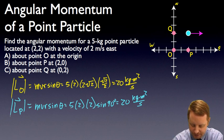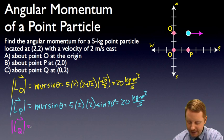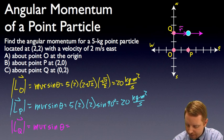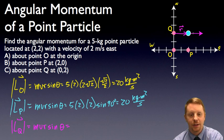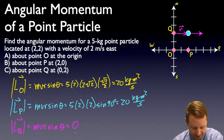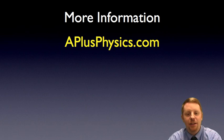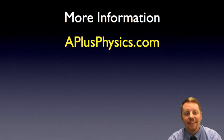Now let's find the magnitude of the angular momentum about point Q. That's m v r sine theta. Our position vector from Q to our particle points in the same direction as the velocity vector, so the angle between r and the velocity vector is 0 degrees. Sine of 0 is 0, so the angular momentum of that particle about point Q must be 0. This shows that angular momentum is dependent upon your reference point. Hopefully that gets you started with angular momentum. We'll talk more about it when we discuss the law of conservation of angular momentum. Have a great day, thank you so much for your time.